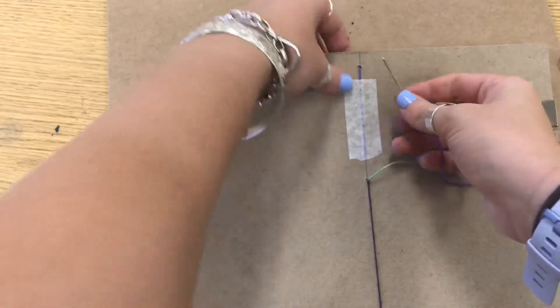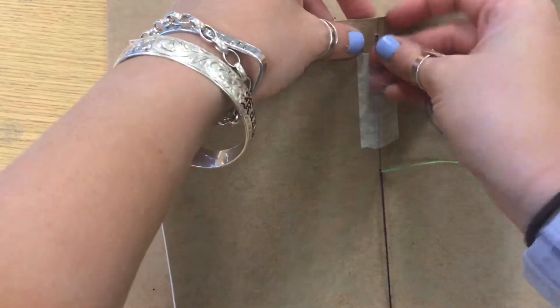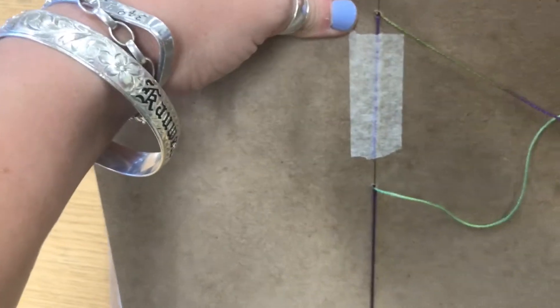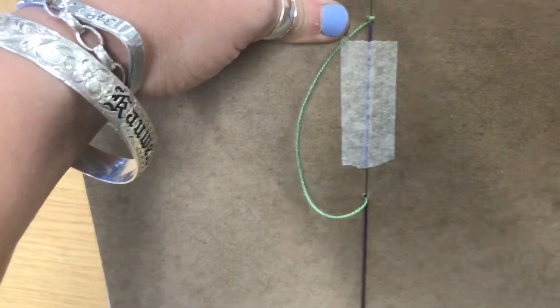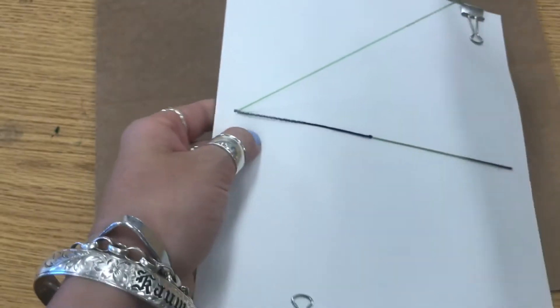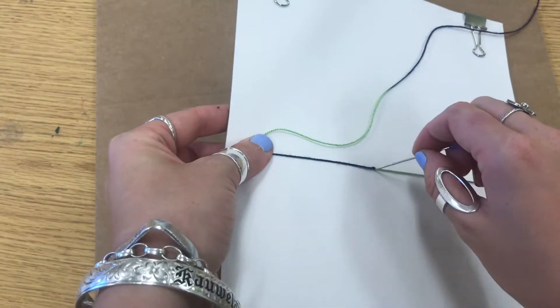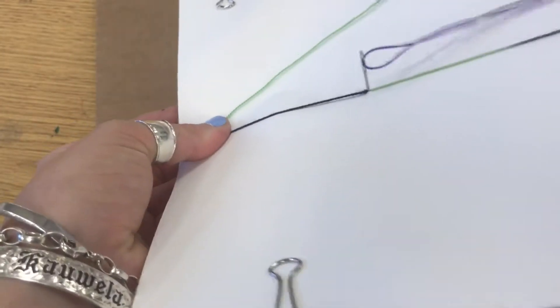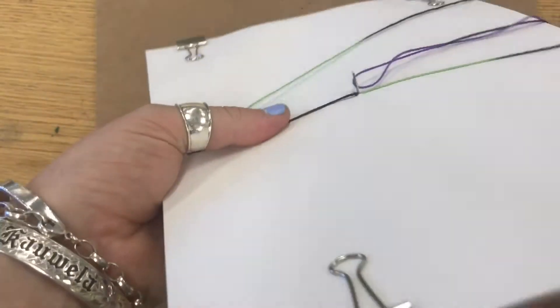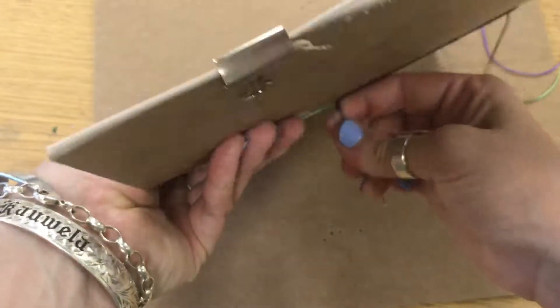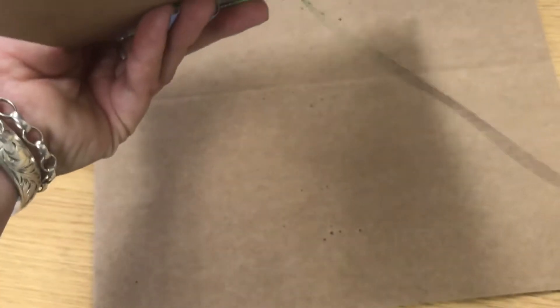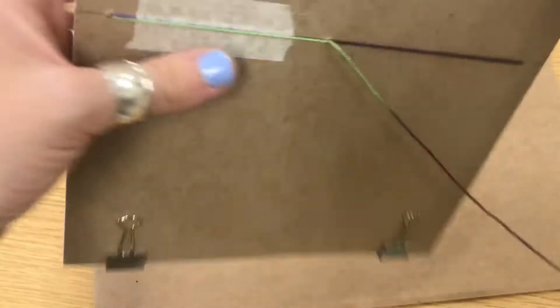Then you're going to start the same process over again by going in through the back of the cardboard, pull it tight, and then back out through the inside where the middle hole is. I'm going to pull that tight and then go back up through the bottom.